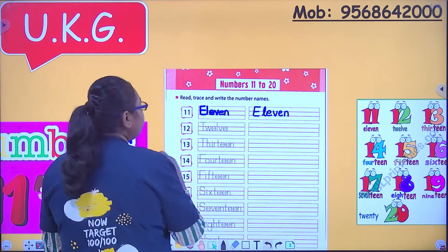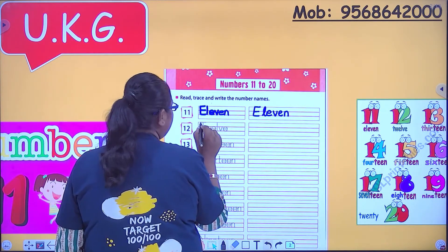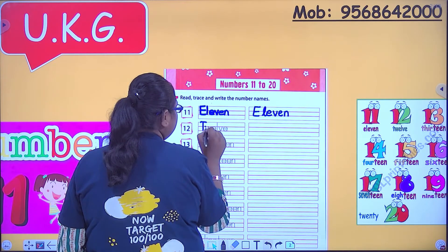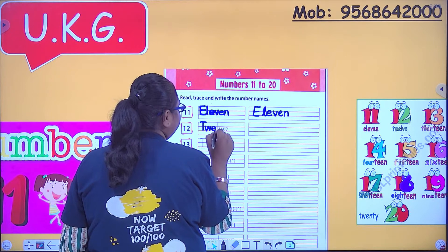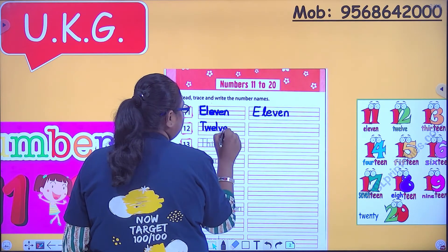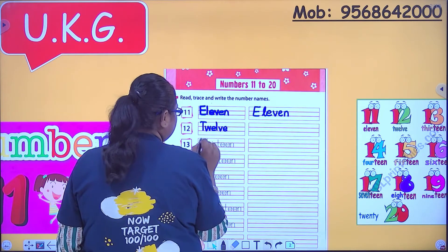Chaliye ab 11 ho gaya. Now we'll trace 12: T-W-E-L-V-E. 12. Then comes 13.